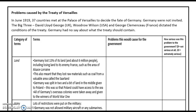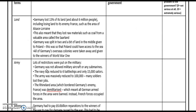So we're going to try and explain this a little more simply through the next task. What I would like you to do is read through the table below and identify what problems this would cause for the government and how serious a problem this was. I'll do the first section to explain, looking at the terms of the Treaty of Versailles and what it meant for Germany.